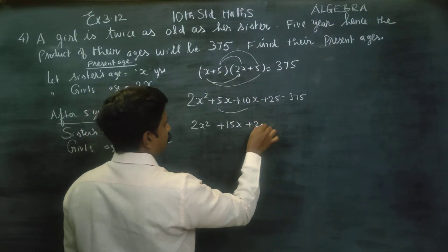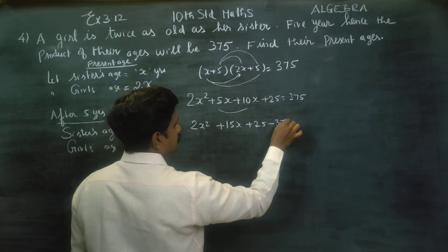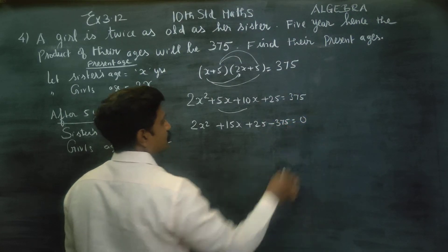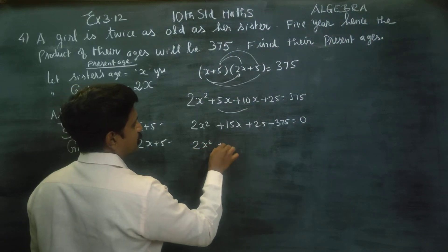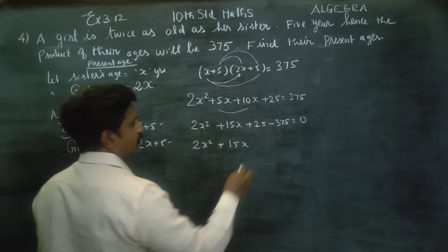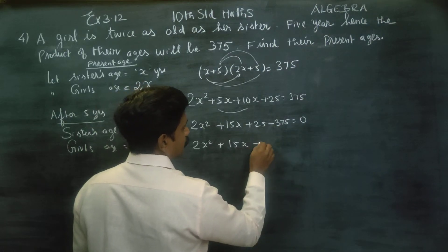Plus 25 minus 375 is equal to 0. I will be getting 2x square plus 15x minus 350 is equal to 0.